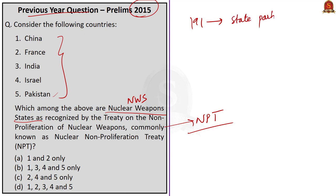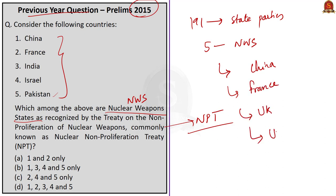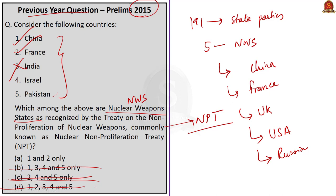From the options, China (one) and France (two) are definitely in the answer. Since India has neither signed the NPT nor is a party to it, three should not be in the answer. This eliminates options B, C, and D. The correct answer is option A — one and two only. Without even knowing whether Israel and Pakistan are nuclear weapon states under NPT, we arrive at the correct answer by knowing India's status regarding important treaties.